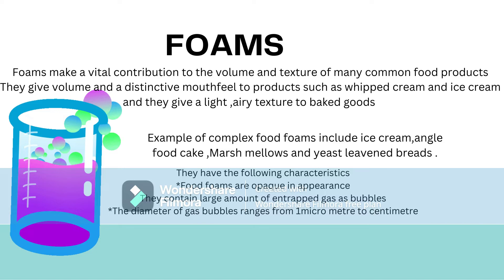Food foams have the following characteristics: they are opaque in appearance; they contain large amounts of entrapped gas as bubbles; they have a large surface area between the dispersed gaseous phase and the continuous liquid phase; walls of foams are rigid and elastic and reflect light. Depending on the size of the gas bubble and the thickness of the wall liquid, foams are categorized as light or dense.